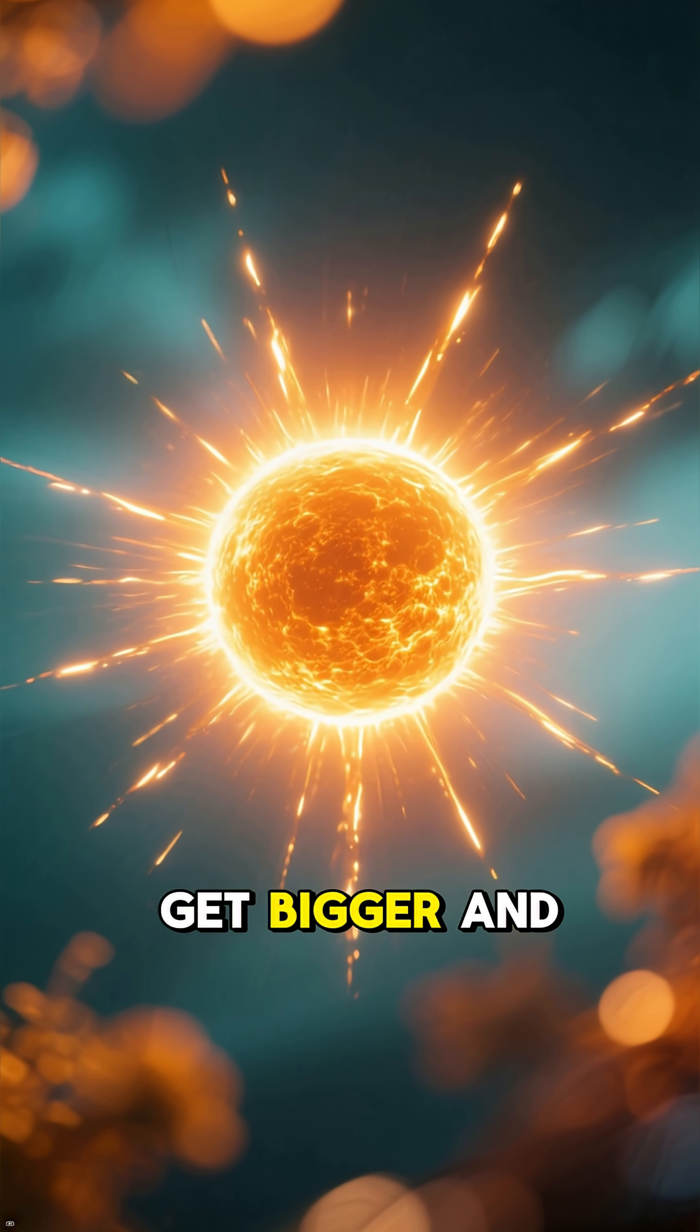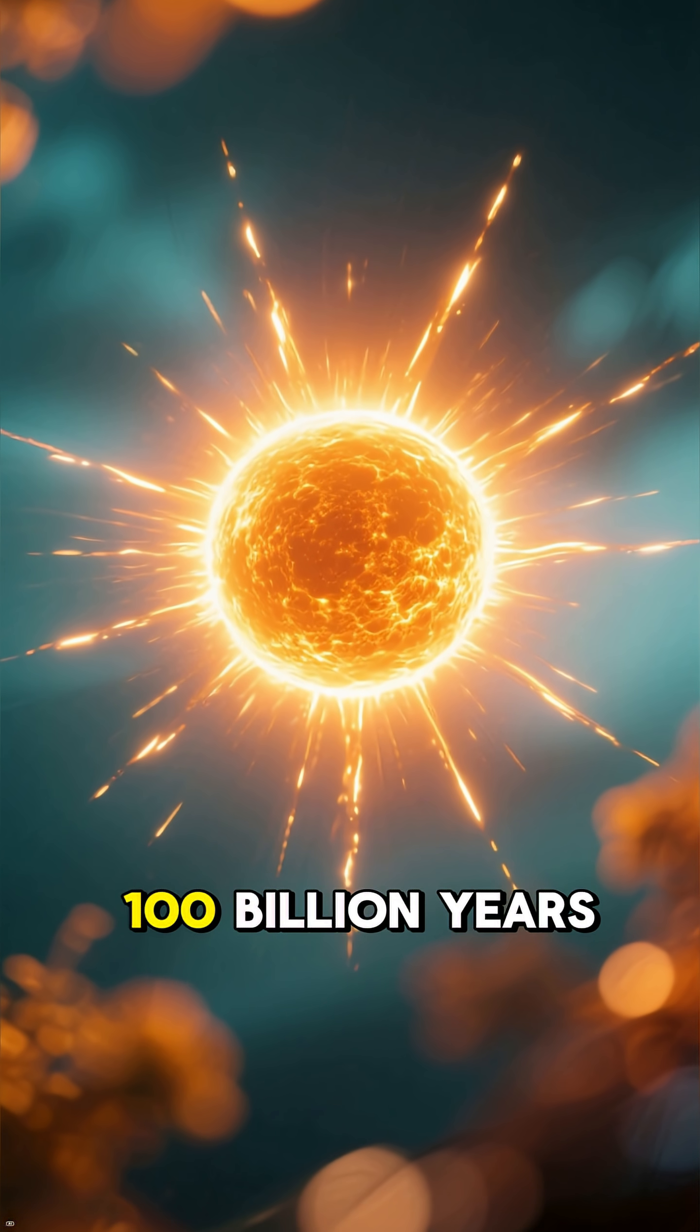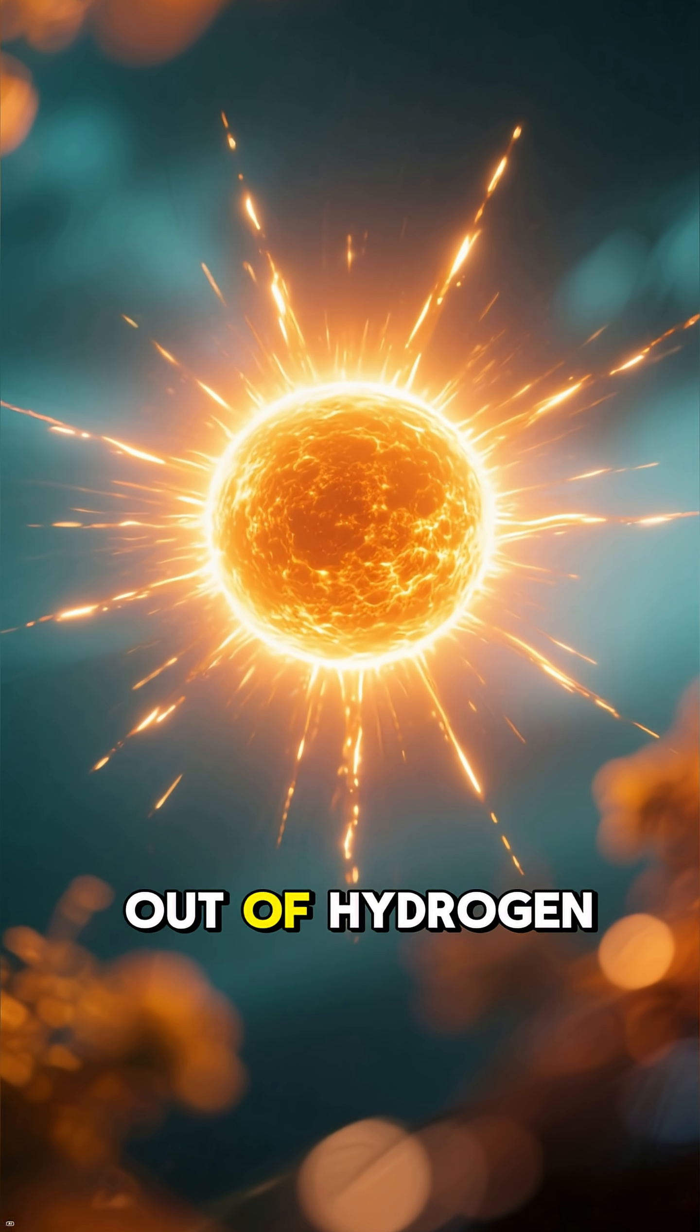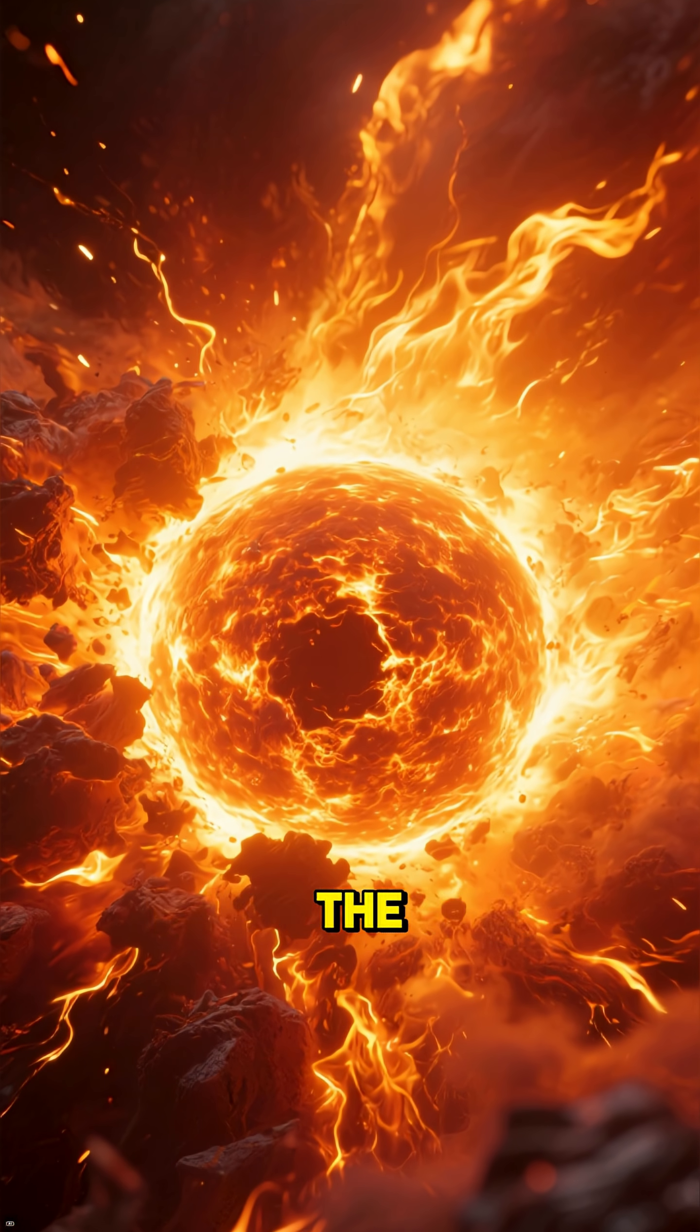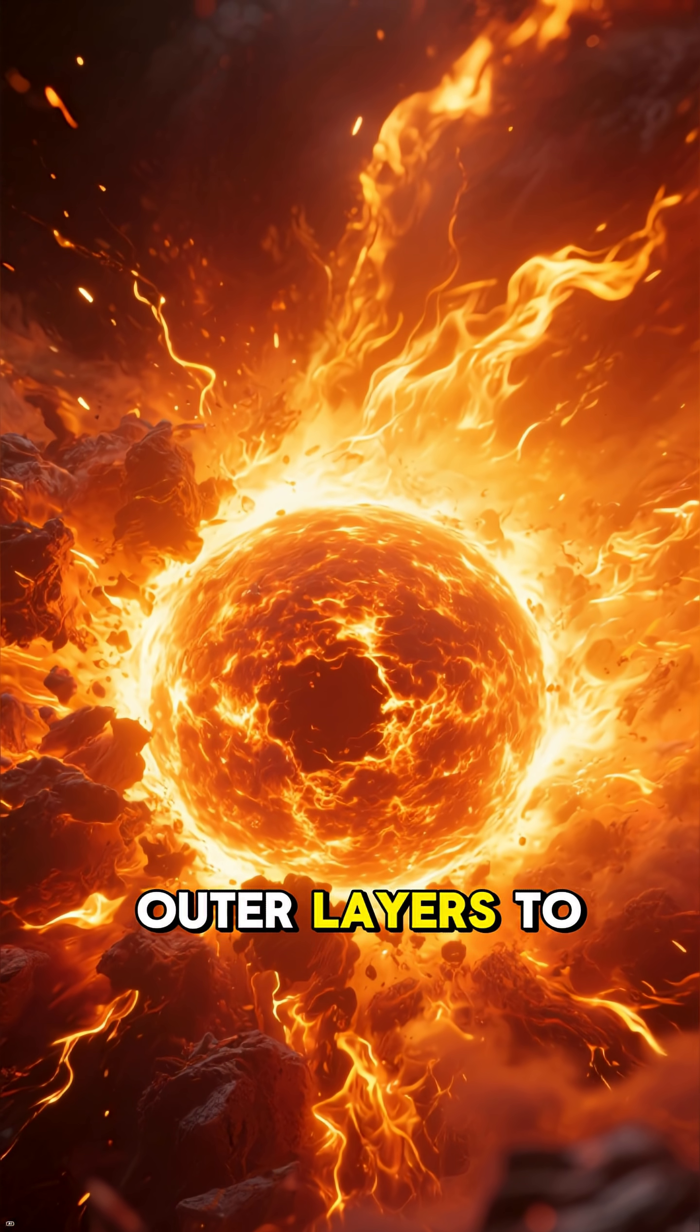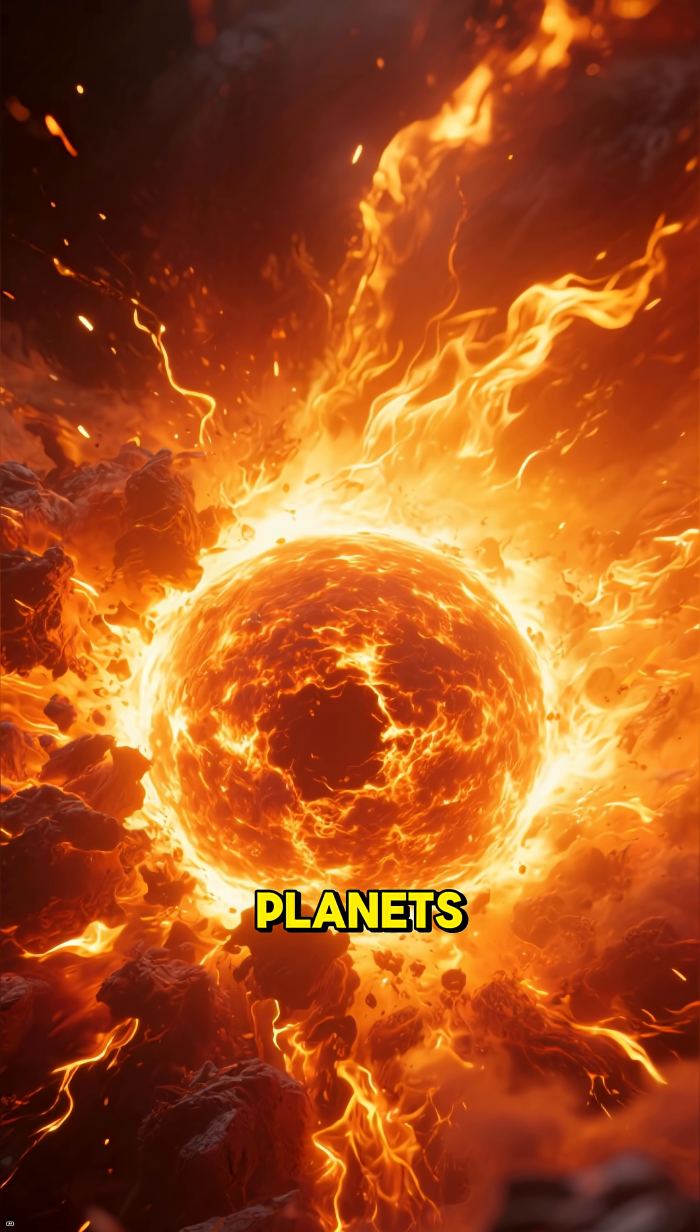During this phase, the Sun will get bigger and brighter, but in about 100 billion years, it will run out of hydrogen fuel. This will cause the core to collapse and heat up, causing the outer layers to expand and engulf the nearby planets.